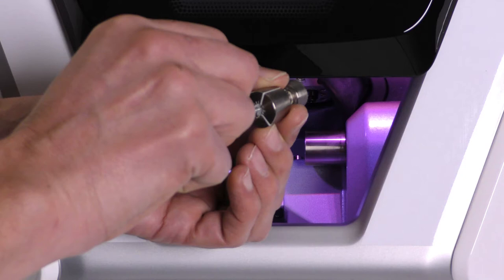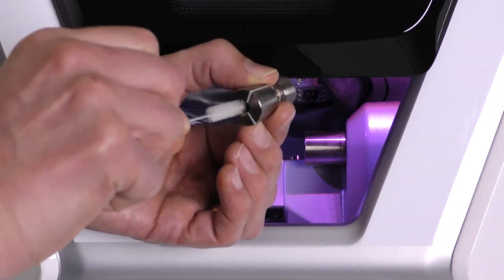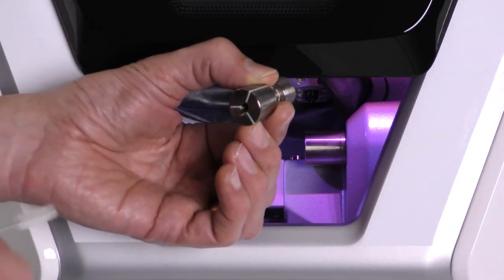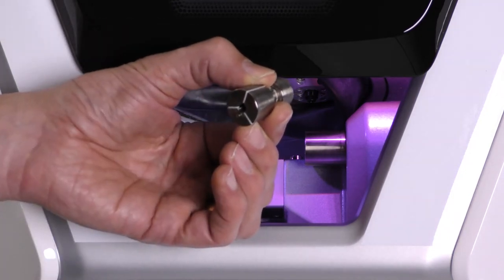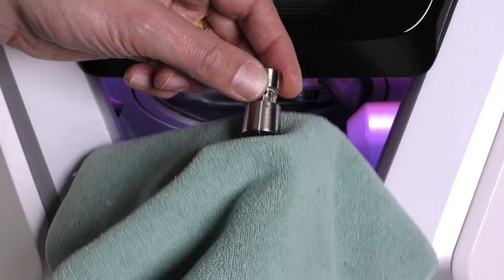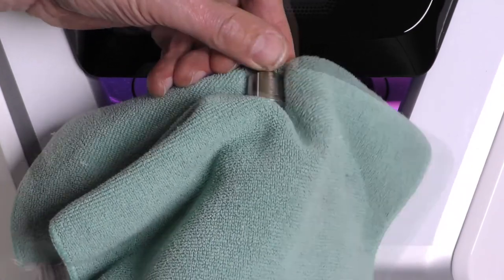Do not push any further because otherwise dirt may get into the thread of the collet chuck. Rapidly pull the brush out of the blank holder collet chuck and twist it at the same time. Repeat the last two steps multiple times. Clean the outside of the collet chuck with a cloth.